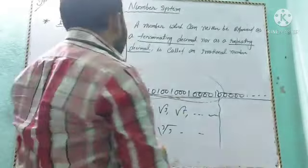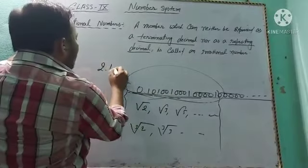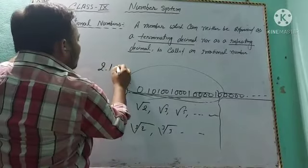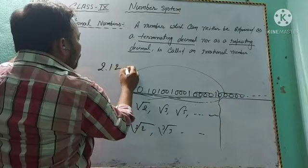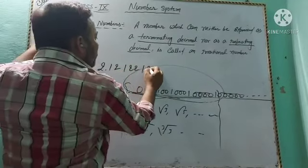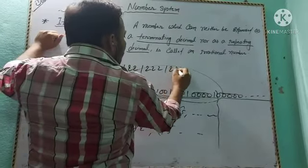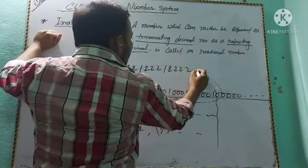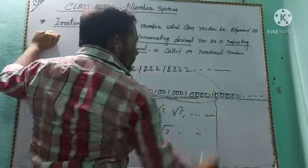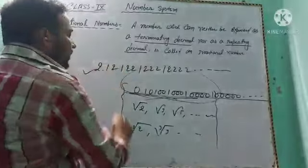Similarly, 2.1212212221... (where the number of 2s keeps increasing) is also an irrational number, because it is neither terminating nor repeating.